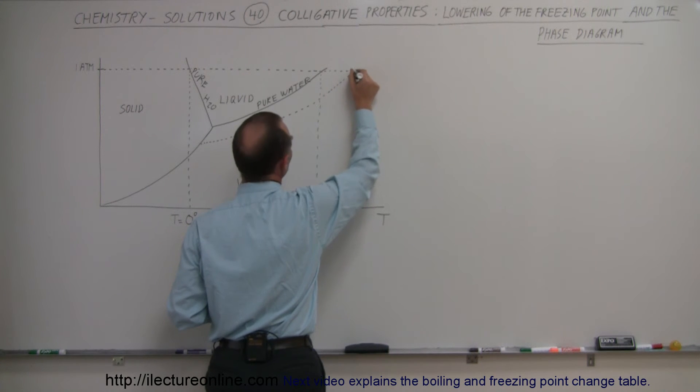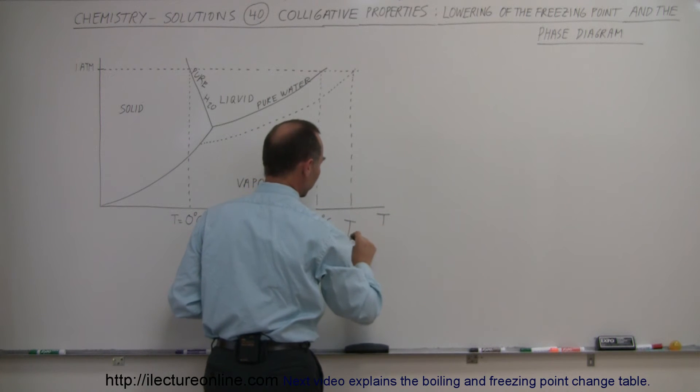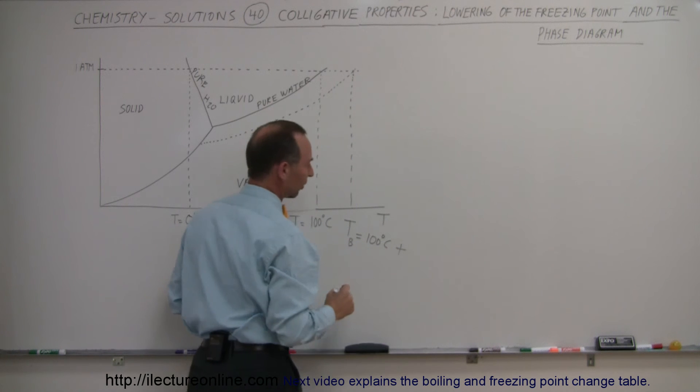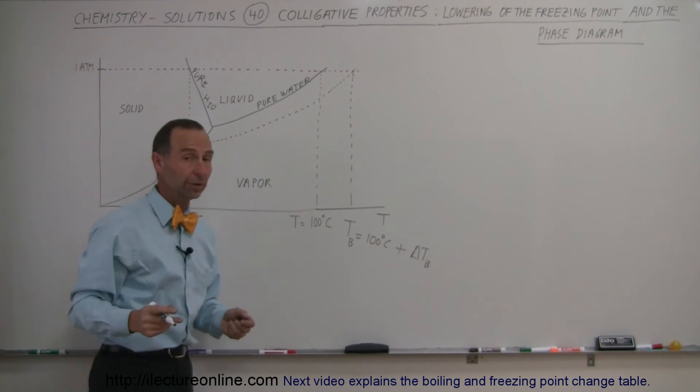So that would be this line down here. This would be the new temperature for the boiling point, which is 100 degrees centigrade plus the change in the boiling point temperature required or caused by the solute being added to the pure water.